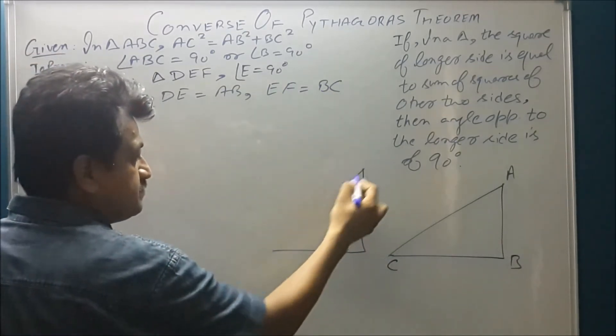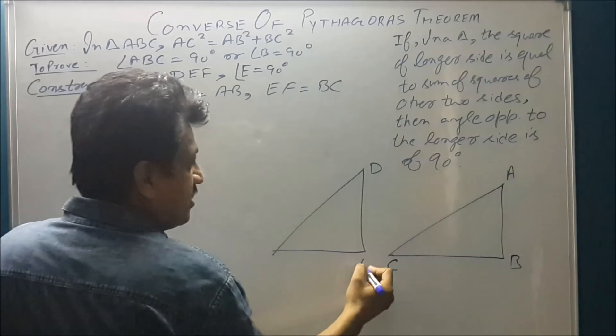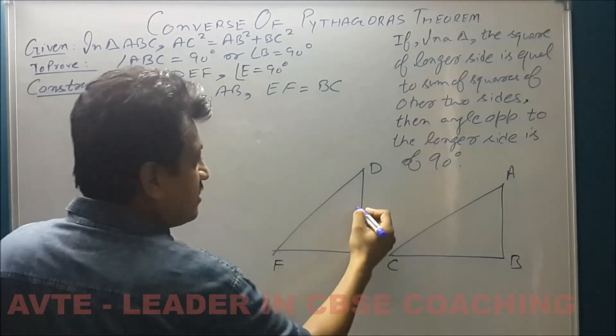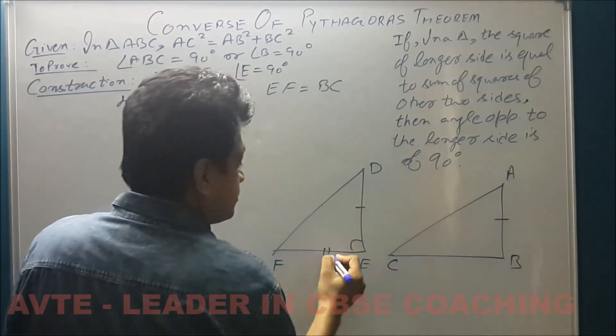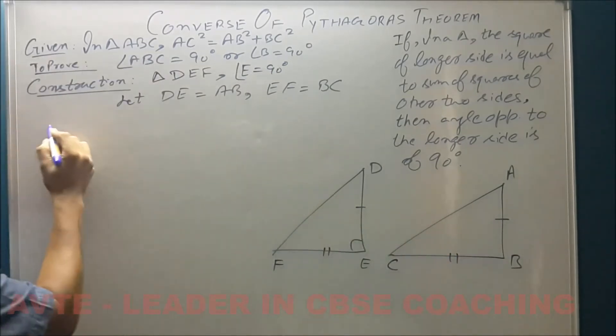Here you go. Triangle DEF is a right angle triangle and we have to assume that this is equal to this and this is equal to this. So we come to the proof.